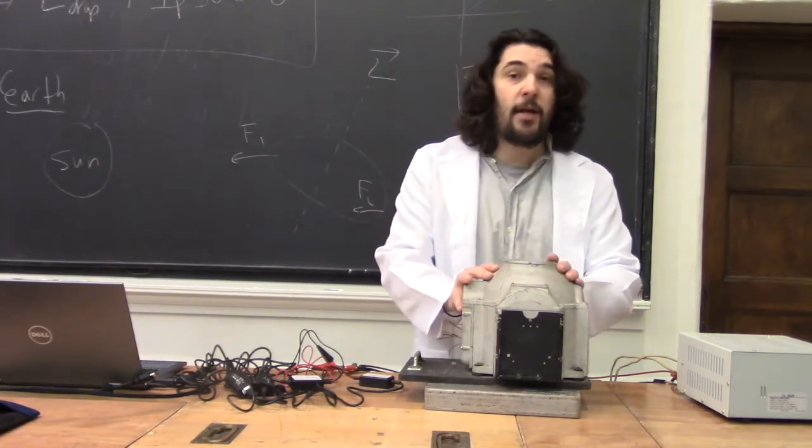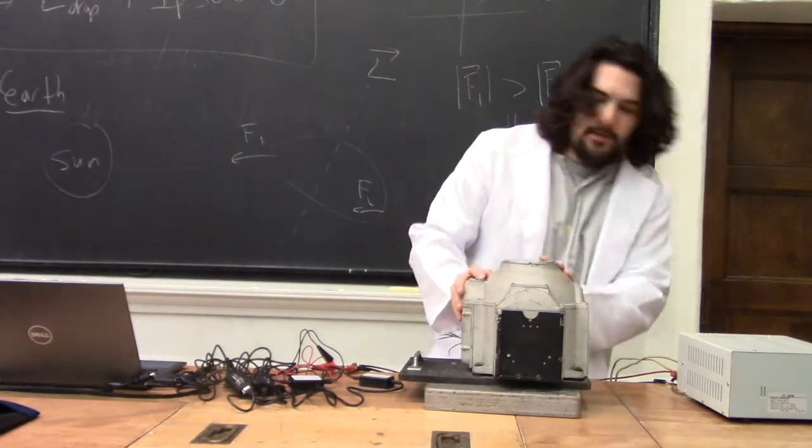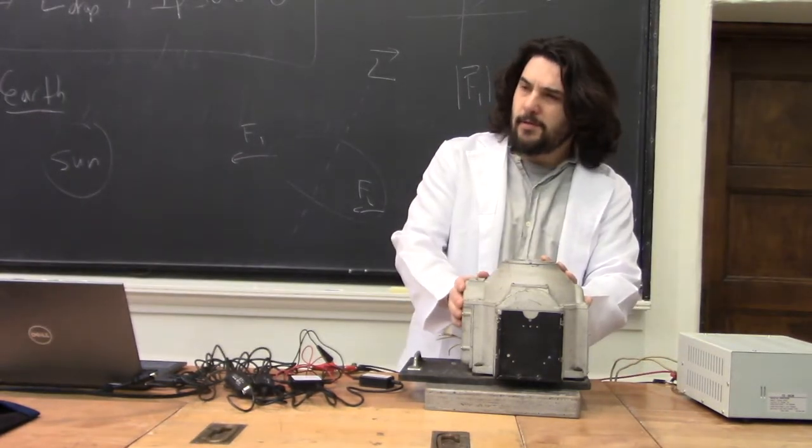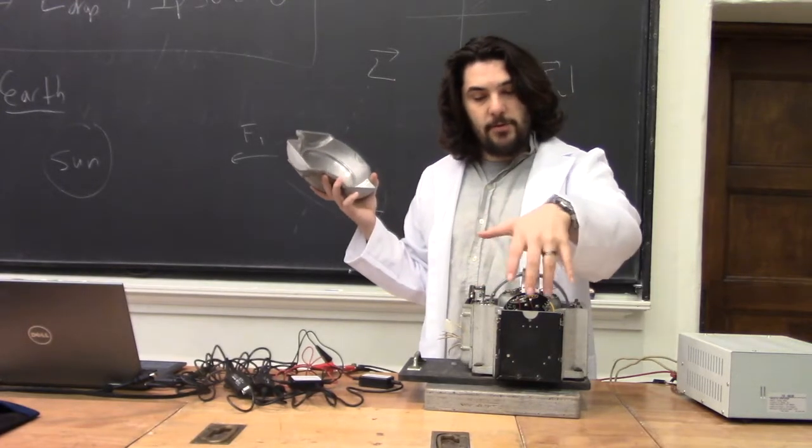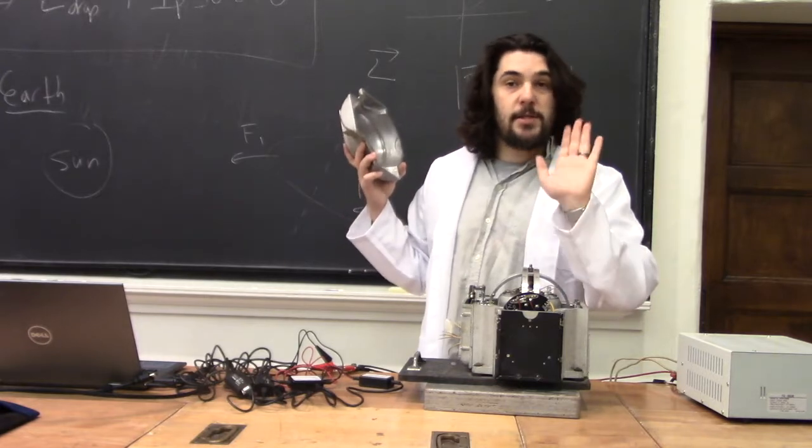I have here a navigational gyroscope pilfered from the U.S. Army Air Force. Didn't they dissolve in the 40s? The gyroscope is hooked up to two potentiometers, one on each axis. So as the orientation changes, their resistance changes.